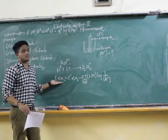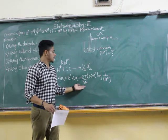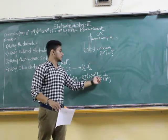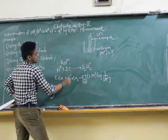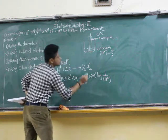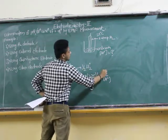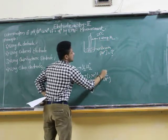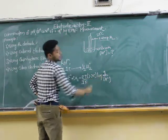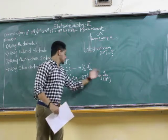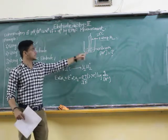From the Nernst equation, E of cell at any temperature equals E° of cell minus (RT/nF) × 2.303 log Q. Here, n is one electron, so n = 1. Q is the reaction quotient — since we maintain 1 atm H₂ pressure, Q = 1/[H⁺]. This gives the potential of this electrode.